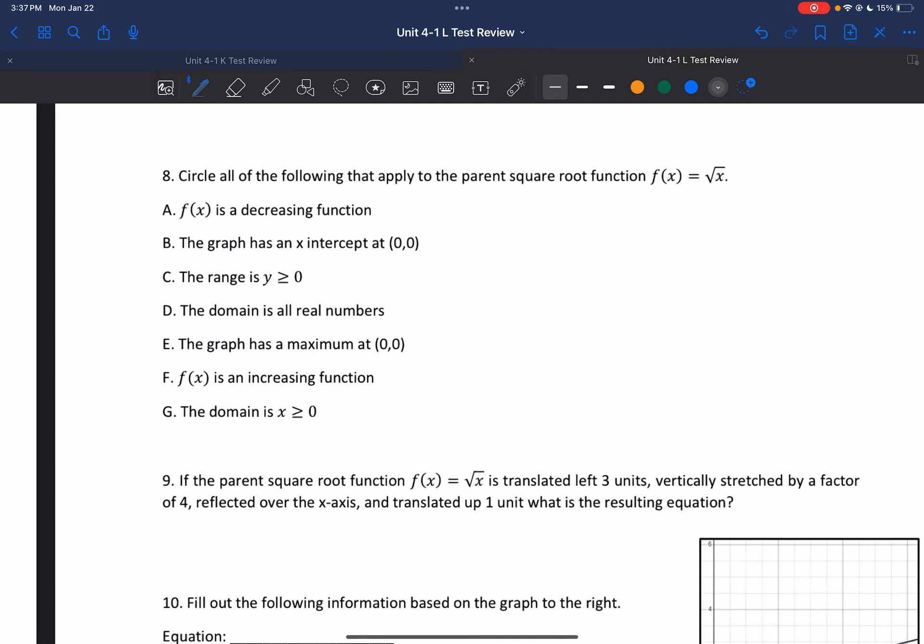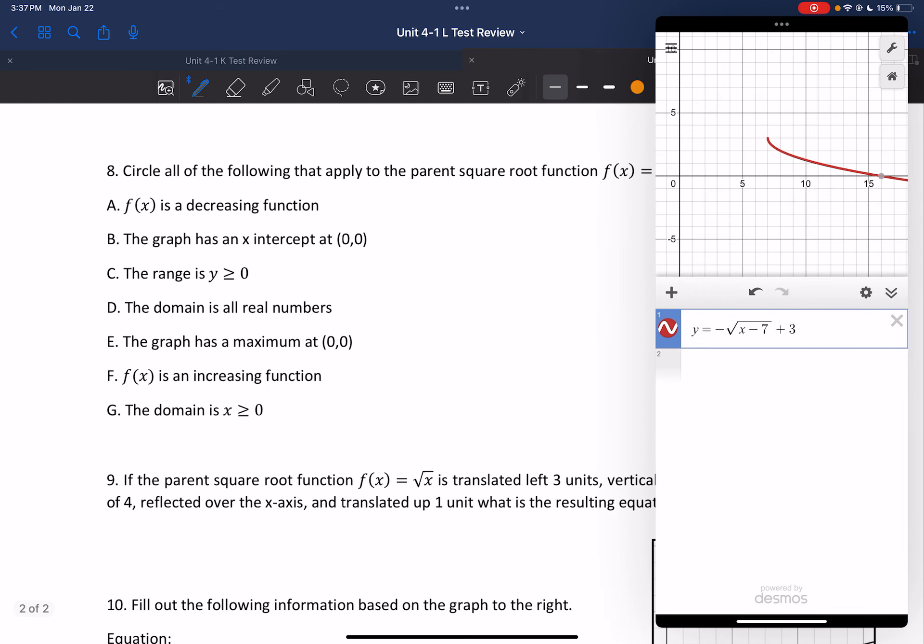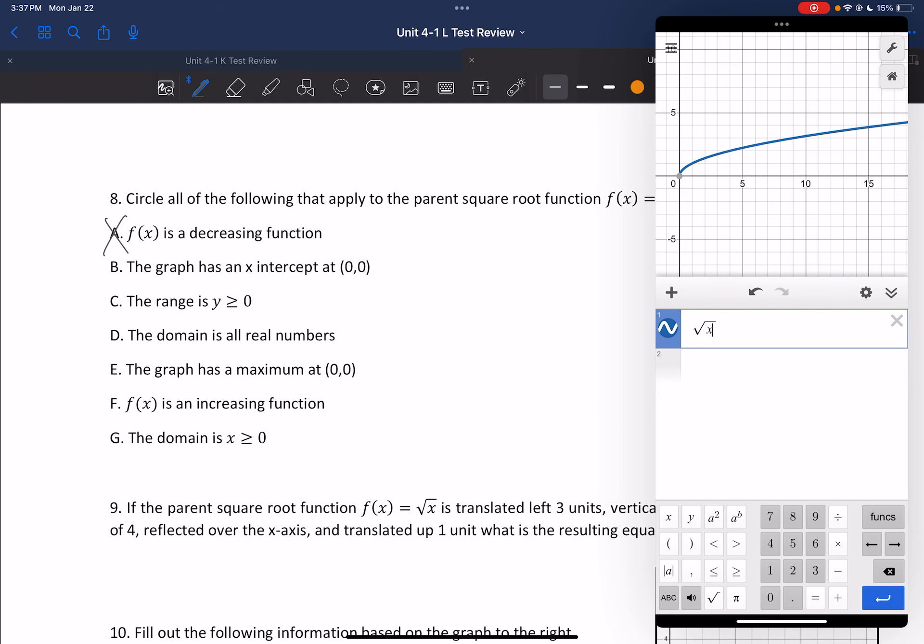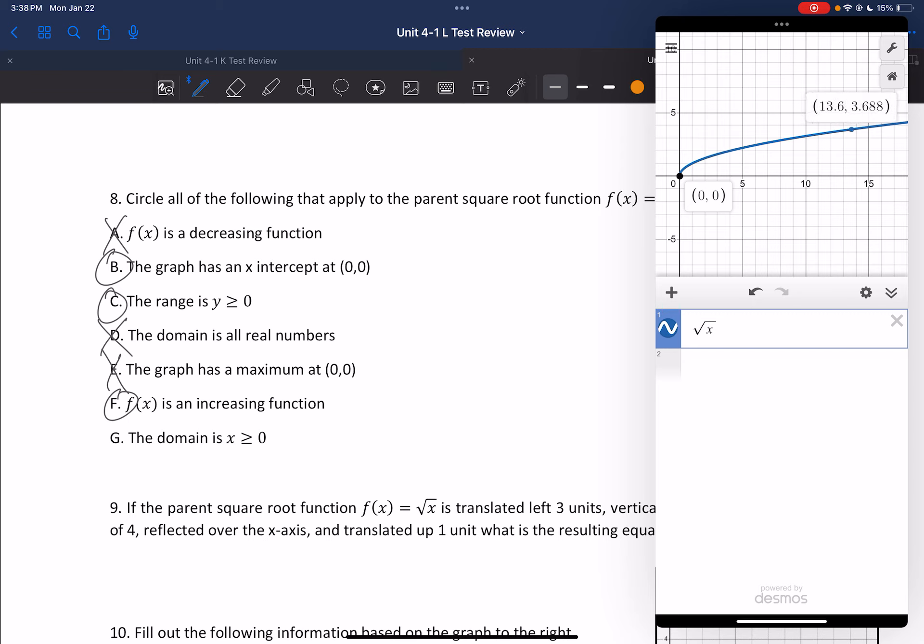All right. Which of the following apply to the parent square root function? Let's graph it really quick. Square root of x. Okay. It is going up and to the right, so it's not decreasing. x intercept of 0, 0. Yes, we see that there. Range is greater than or equal to 0. Yes, starts at 0, goes up. Domain is all real numbers. No, because we do not have any negatives. The graph has a maximum at 0, 0. It goes through 0, 0, but it's not a maximum. It's the lowest point, so it would be a minimum. It's an increasing function. Yes. As we go right, we go up. Domain is greater than or equal to 0.